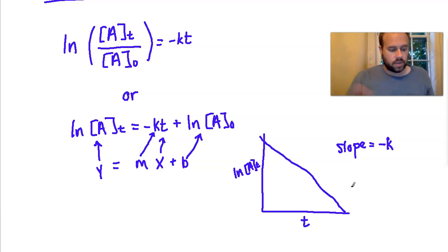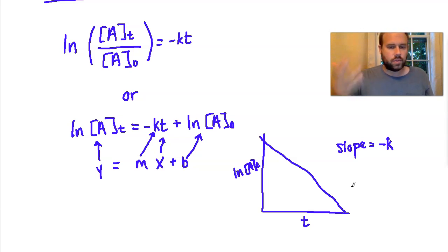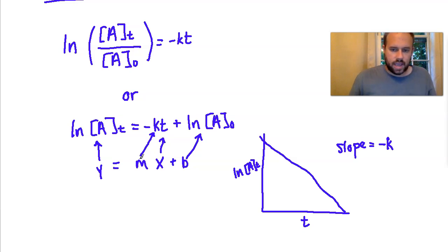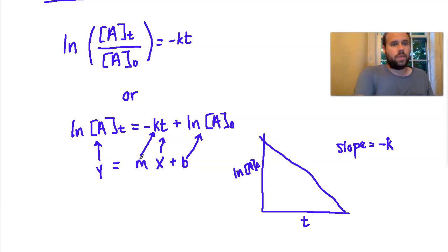Why negative? Because A is going to decrease over time. We start with some concentration of A and we expect that over time A is going to be decreasing, since it's a reactant. That's how we tie that together.